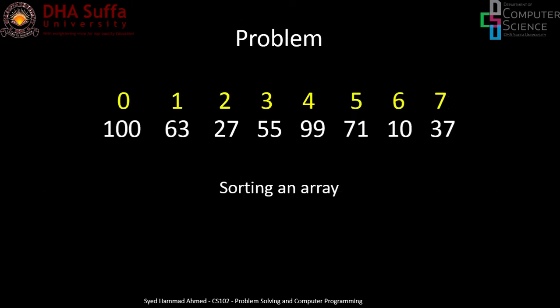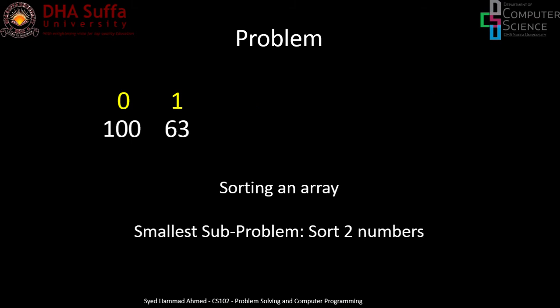In this example n is 8. The yellow numbers are the indexes of the array. The smallest sub-problem we can think of is sorting two numbers. In order to solve sorting n numbers, we should first solve that smallest sub-problem. So the first two numbers are 163 — instead it should be 63 then 100.